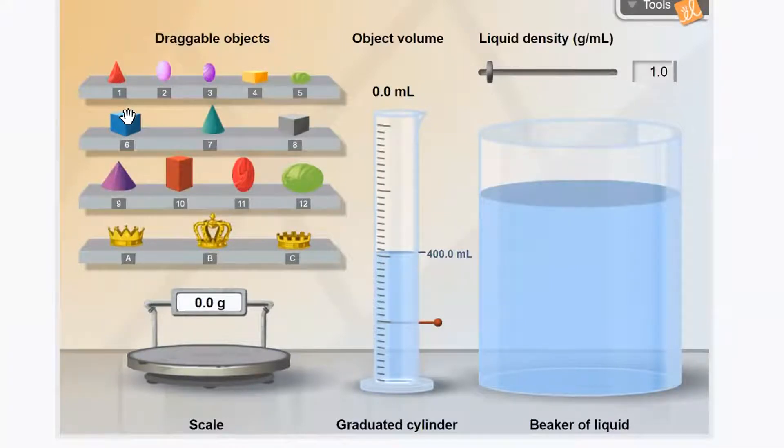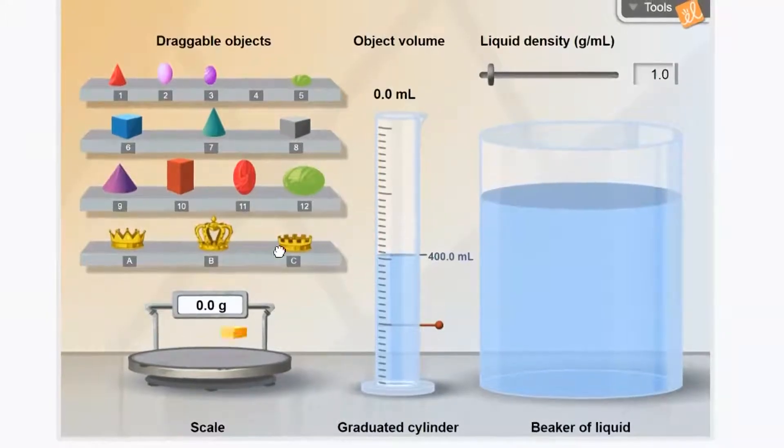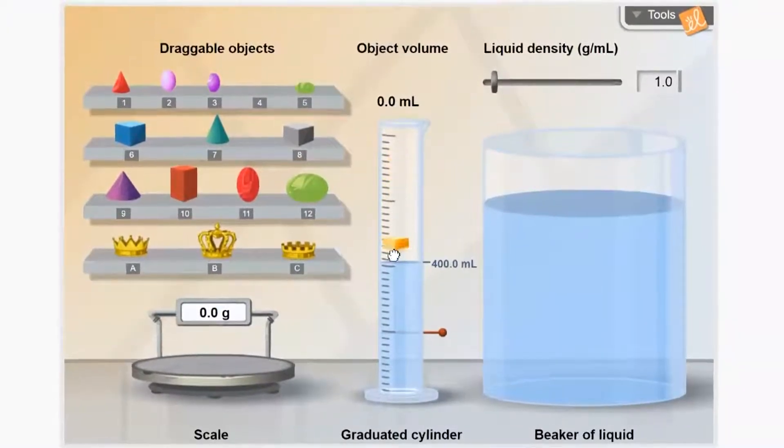Okay, so let's take an example. Let's take this object right here, which is kind of gold color, and we'll put it on the scale. 134.8 grams. So if you were choosing that object, object number four, you would record that mass. We can take that same object by clicking on it, and we can put it into the graduated cylinder.